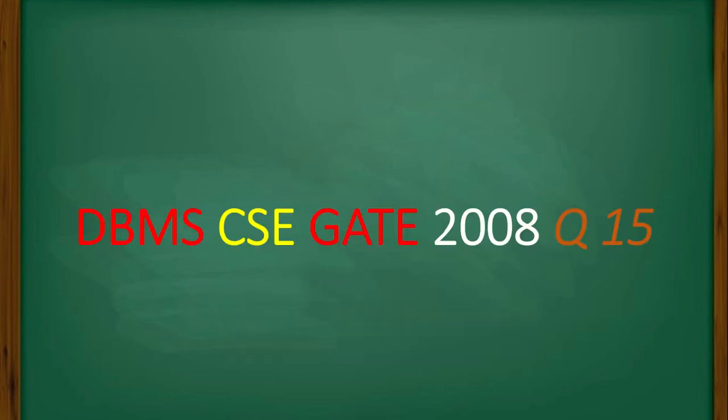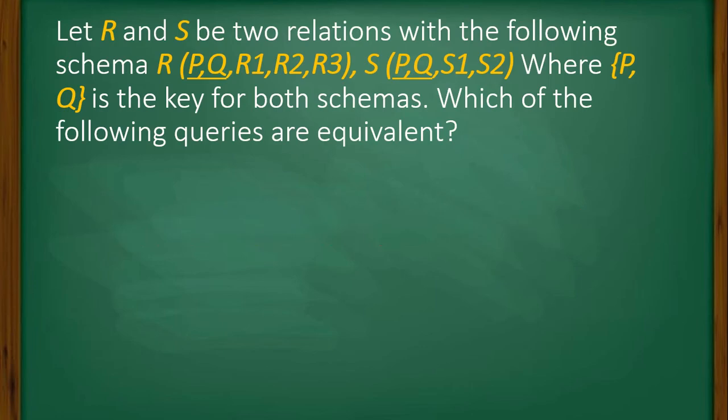Hello all, here is a question from DBMS GATE 2008. Let R and S be two relations with the following schema: R has attributes P, Q, R1, R2, and R3, while S has P, Q, S1, and S2, where P and Q is the key for both schemas. Which of the following queries are equivalent?